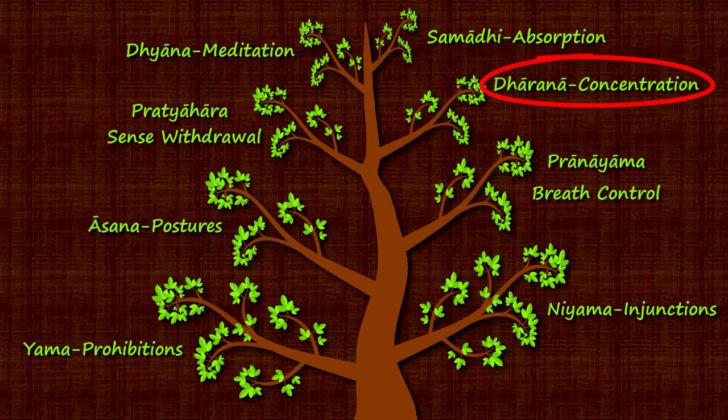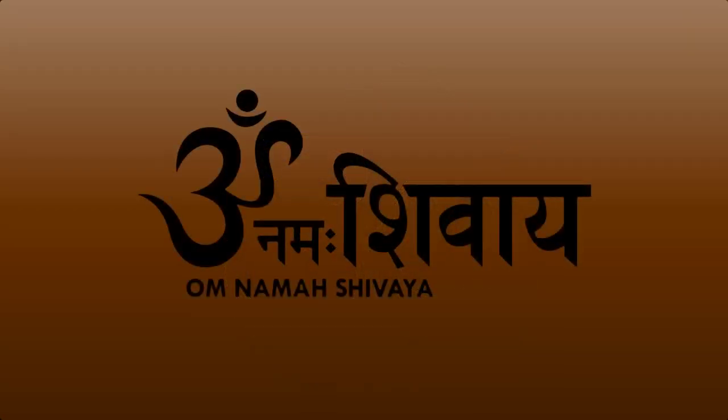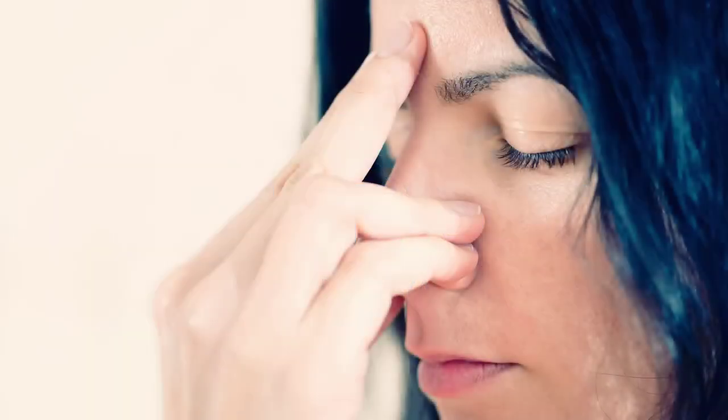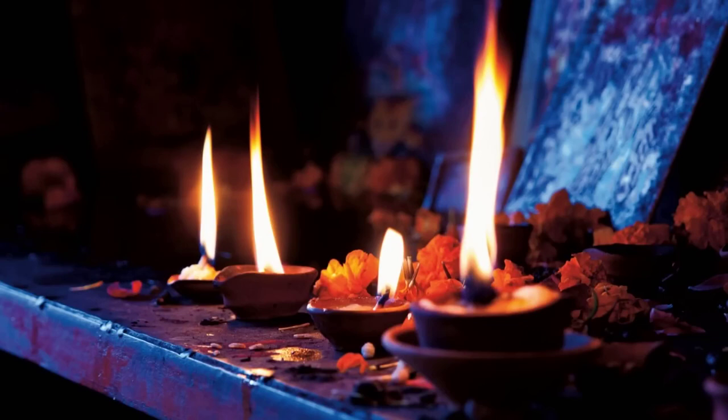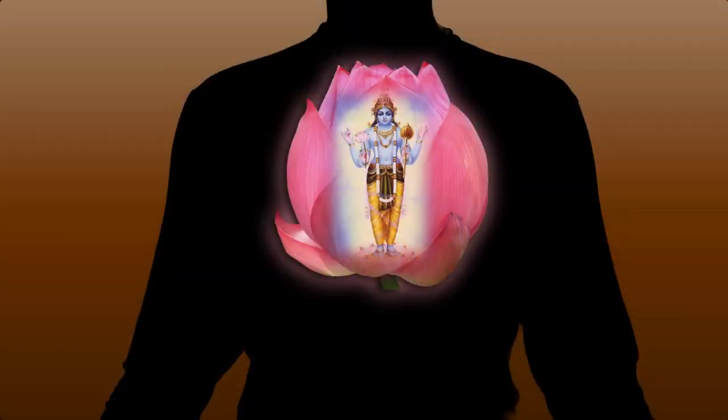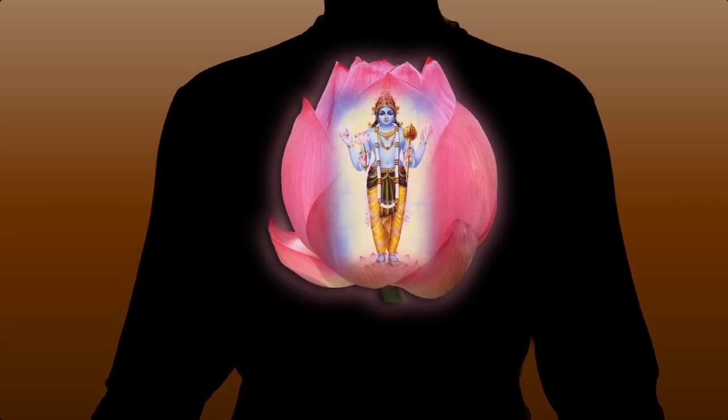Dharana is concentrating your attention on an object of meditation. You can concentrate on many things: on the sound om, on a mantra, on your breathing, on a sacred image or a candle flame, or as prescribed in the Bhagavad Gita, on the divine presence within you. The fact that yogic meditation is so widely practiced is largely due to the great variety of objects that can be meditated upon — you are free to choose an object that appeals to you and is well suited to your individual needs and inclinations.